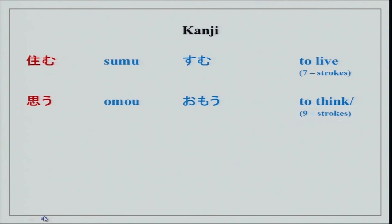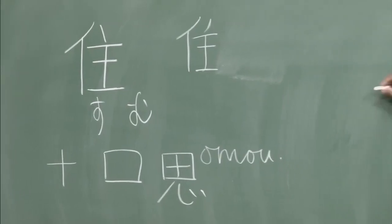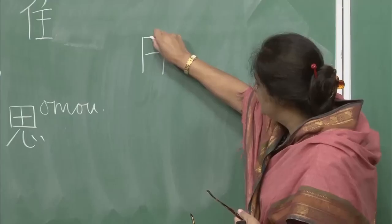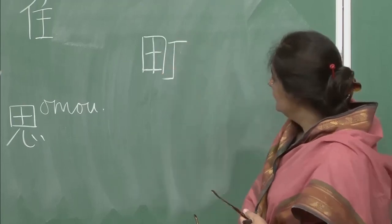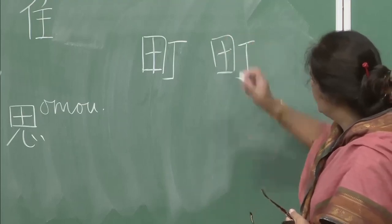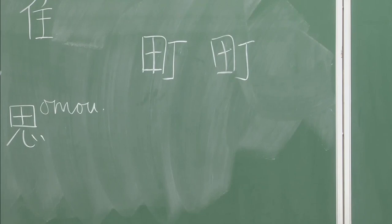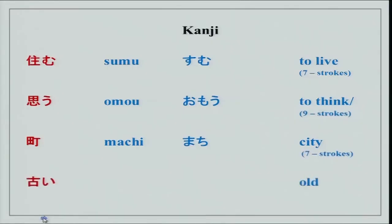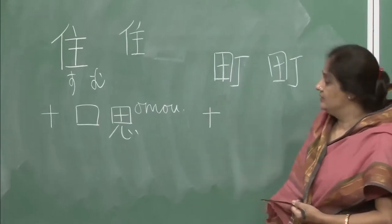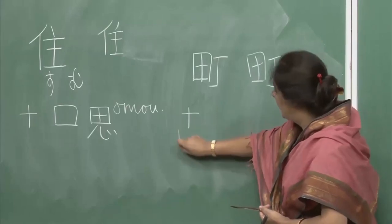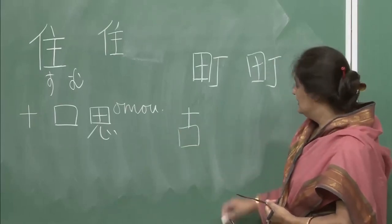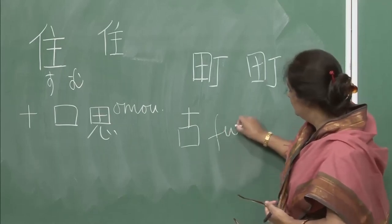Then machi — the character is similar to omou with an additional element — a 7-stroke character. Then furui — old. You have done juu (ten) and kuchi (mouth), and they combine to make furui. Please remember: hito wa furui is not used — things are furui. So hon wa furui desu, not hito wa furui desu.